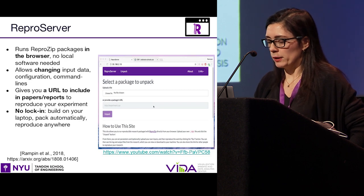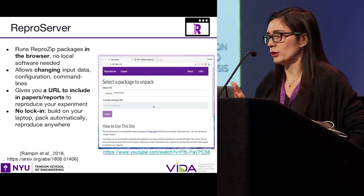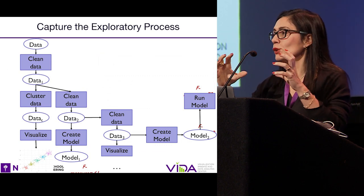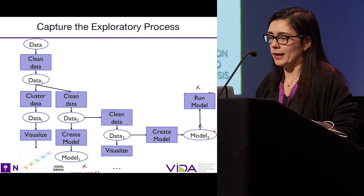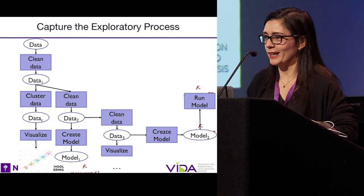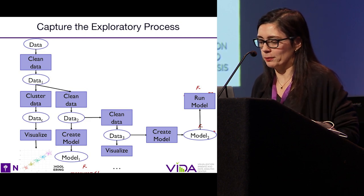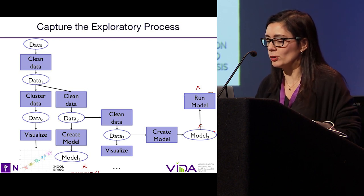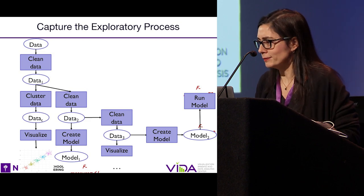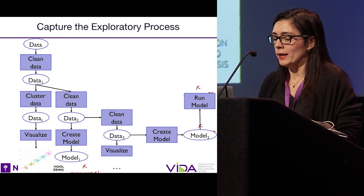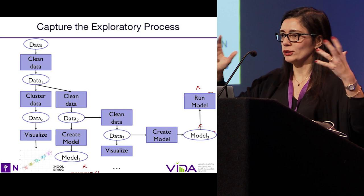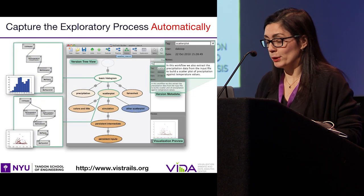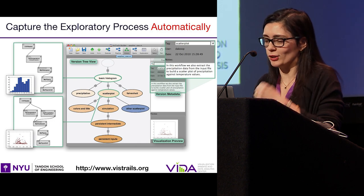Tools like ReproZip, or documenting provenance through your code, work well for individual components of an analysis. But as we've shown before, an analysis can contain several different steps that you iteratively go through during the exploratory process. Maybe for cleaning data you use Jupyter, for visualization you use a third-party tool, for creating a model you use PyTorch or some other machine learning package. So one challenge is how do you actually capture all these different steps that can happen in different tools and different environments? Because this all happens in a computer, it should be possible to capture the details of the whole exploration process.